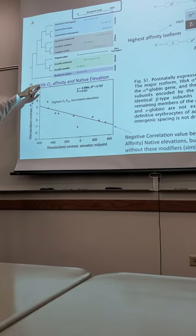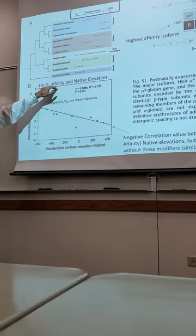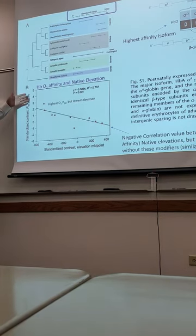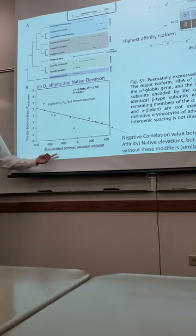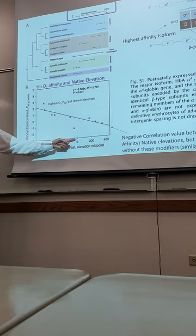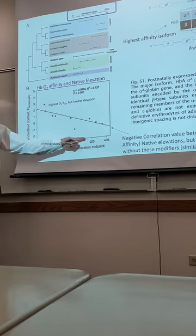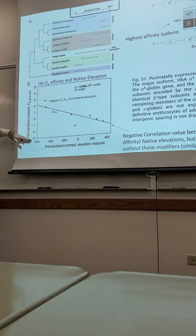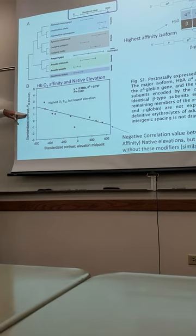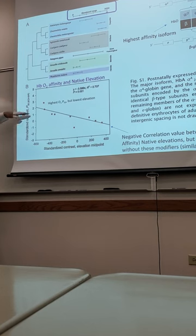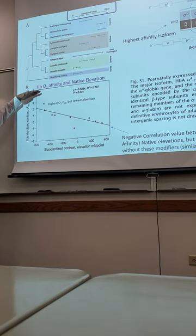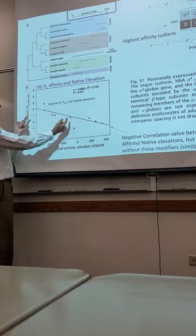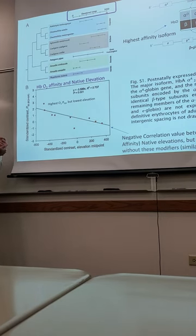So here's the HbO2 affinity for the hemoglobin and the native elevation. On the x-axis, we have a standard contrast elevation midpoint. Here's our zero midpoint. Those ones that are high, the ones that are low elevation comparatively. Then they went over here and they said, same thing. We're going to look at the standard contrast of the affinity. So you have a normal affinity, and you have a high affinity and a low affinity.